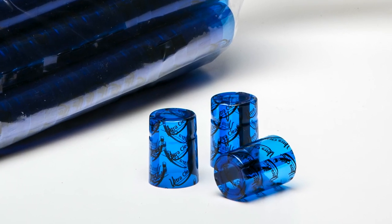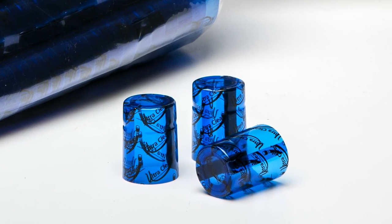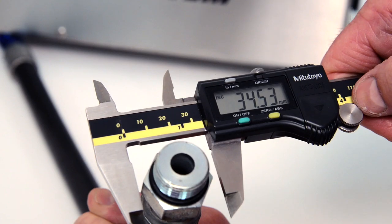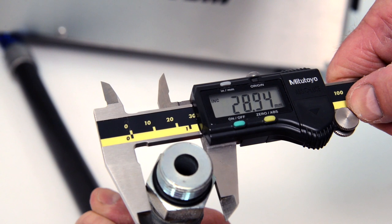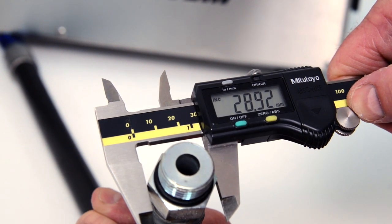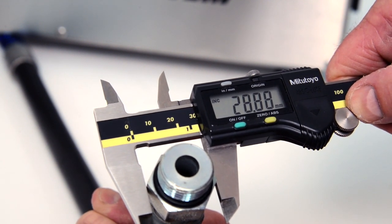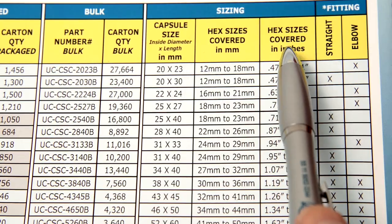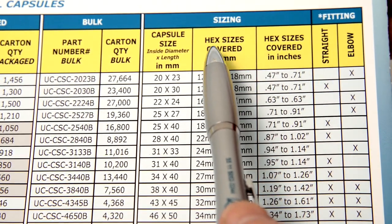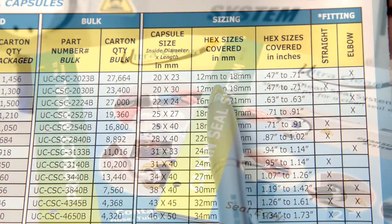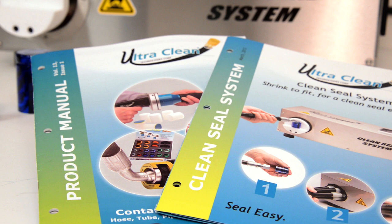Sizing the correct CleanSeal capsule for your application is easy. Measure the end fitting from point to point on a hex style nut or the largest outside diameter of the end fitting. Sizing charts can be found in both nominal inch and millimeter in our product manual and CleanSeal system brochure.